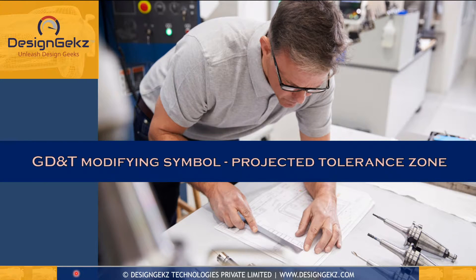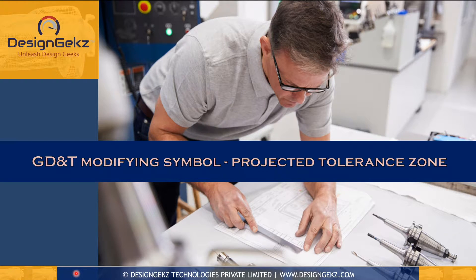The projected tolerance zone modifier symbol P is very important in controlling perpendicularity or tolerance of position in fixed fastener assemblies, to avoid possible interference situations of a bolt or pin with a clearance hole surface in the upper part. In this video, we are going to study the application of the projected tolerance zone and other options to clear the bolt, in case you don't want to use the projected tolerance zone modifier in the feature control frame.